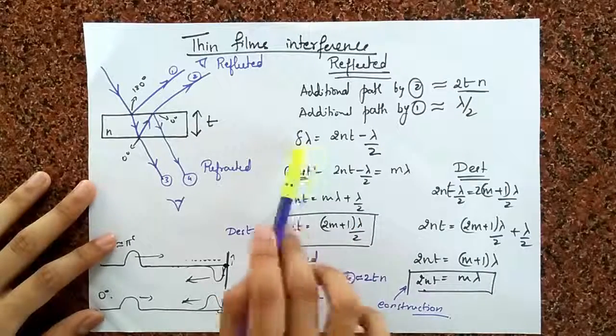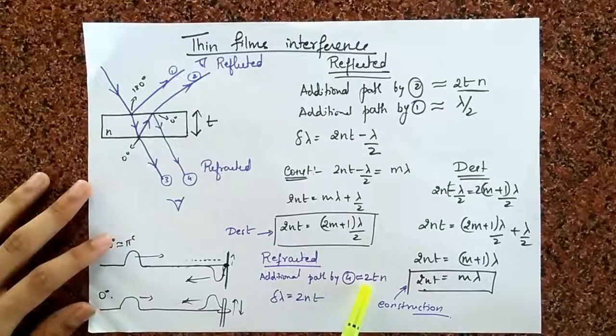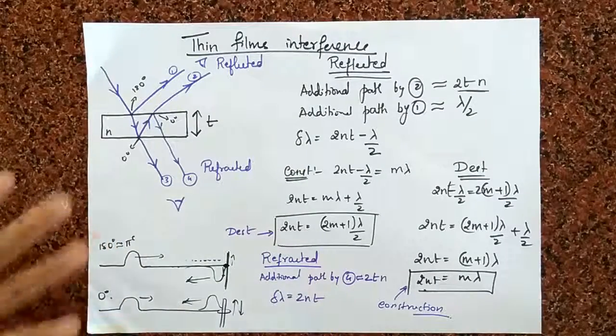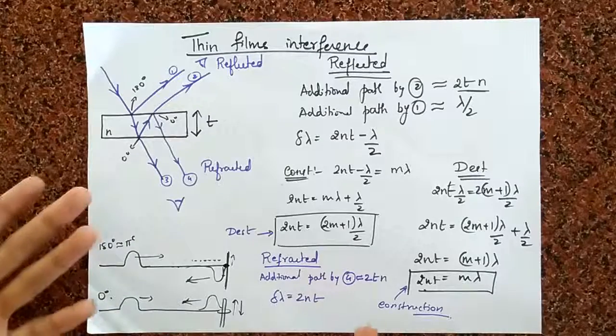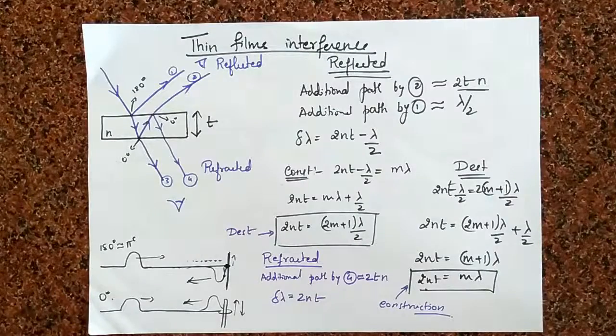That phase shift is the one that is causing an additional path difference. Because of that, the true path difference over here is 2nt minus lambda by 2, and the true path difference over here is just 2nt. So don't think that in reality your physics has changed. The physics has remained the same. It's only because of this additional term, the conditions appear to have reversed.